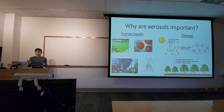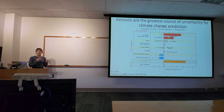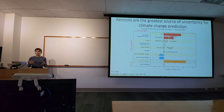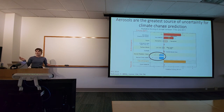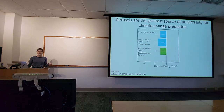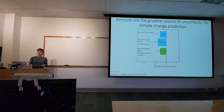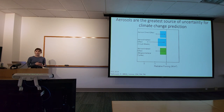Aerosols are the greatest source of uncertainty for climate change prediction. This IPCC 2014 figure shows different sources of radiative forcing, and aerosol–radiation interactions and aerosol–cloud interactions clearly have the largest uncertainty. These correspond to: the aerosol direct effect (scattering or absorbing radiation), the aerosol indirect effect from cloud albedo (affecting cloud droplet size), and the aerosol indirect effect from biogeochemical cycles (depositing nutrients and affecting CO2 uptake).